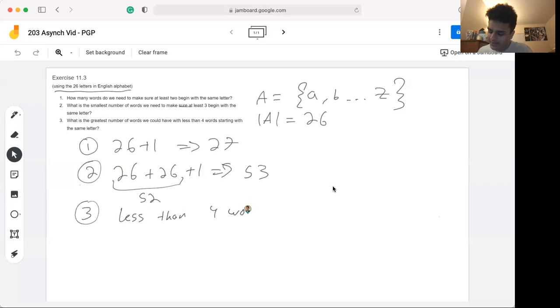One way we could decipher this is mathematically: if we're working with integers, x is less than four would be equivalent to x is less than or equal to three, and that's only in the case where we're working with integers. So saying less than four words, we could instead solve this problem for at most three words.